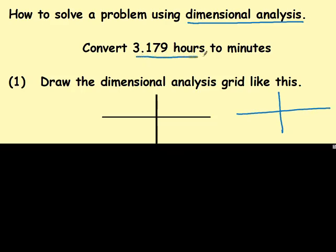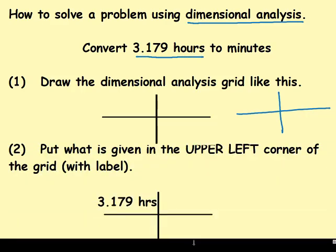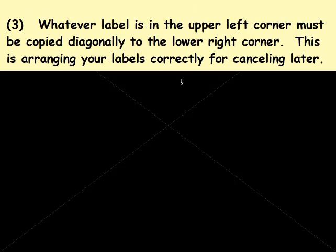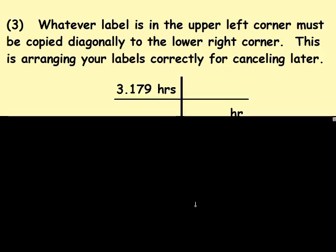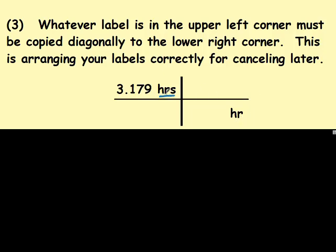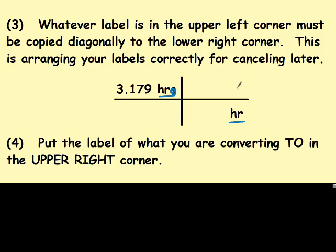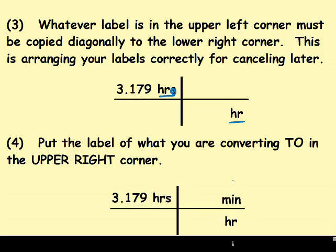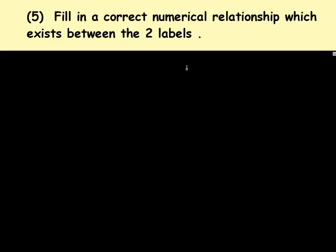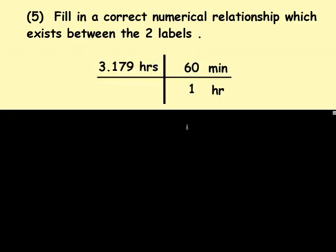Whatever number and unit that they give me I'm going to place in the upper left corner. These steps are on the top of your note sheet and this is the first example problem. Whatever unit or label is in the upper left corner must be copied diagonally to the lower right corner. This is so your units cancel out. So we had hours so whatever unit is here must go down here. Our hours they're going to match. Put what unit you're converting to in the upper right corner assuming you know a conversion between those two. So I had hours and I'm going to minutes and I know a conversion. Next I'm going to fill in that relationship between those two labels. I know that there's 60 minutes in one hour. These two when they're on top of each other have to equal each other.